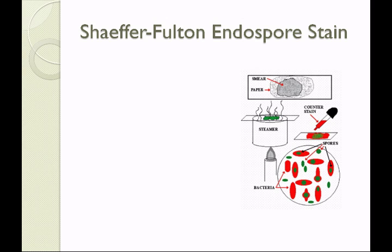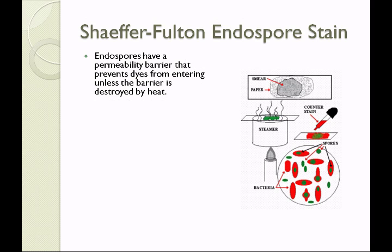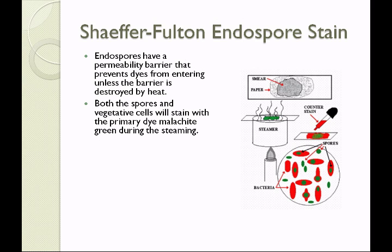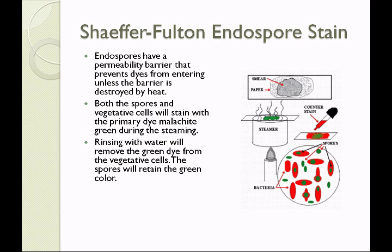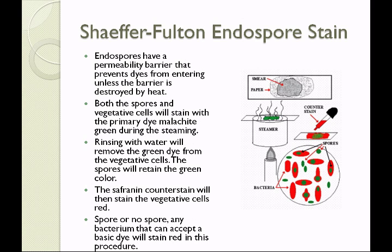You will also perform the Schaeffer-Fulton endospore stain on a species of Bacillus. Endospores have a permeability barrier that prevents dyes from entering unless disrupted by heat. Make a smear, air dry, heat fix, then cover with filter paper and apply the primary dye malachite green. Both spores and vegetative cells stain green during the 10-minute steaming. After steaming, rinse with water — this removes the green dye from vegetative cells while spores retain the green color. Then apply the counterstain Safranin, which stains vegetative cells red.